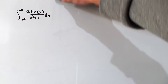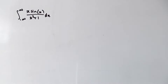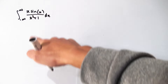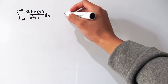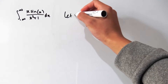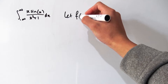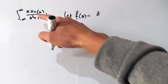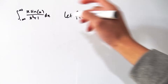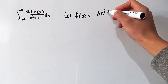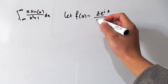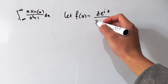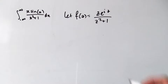First of all, we need to define for ourselves a new complex function. Taking the usual approach for this type of integrand, we're going to let a new function f(z) be equal to z, and then replace sine of x with e to the iz, and divide everything by z squared plus one.